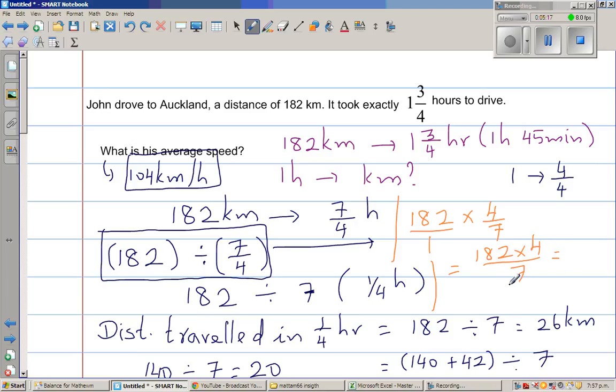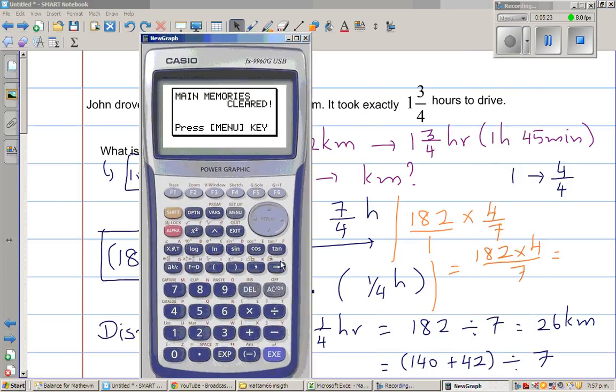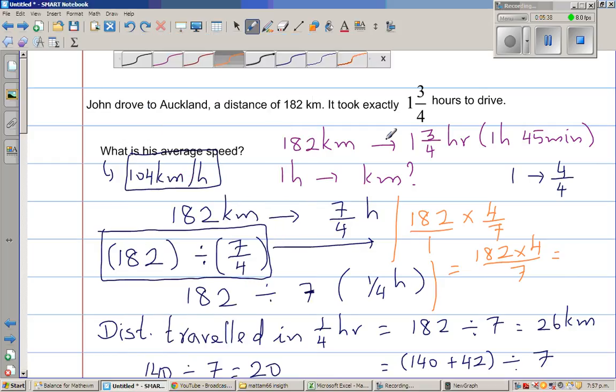So this is nothing but, I'll do it here. So this is 182 times four divided by seven. So let me use a calculator. So this is my calculator. So, menu run. So 182 times four is 728, and that divided by seven, which is 104. So this is how you do with the calculator.